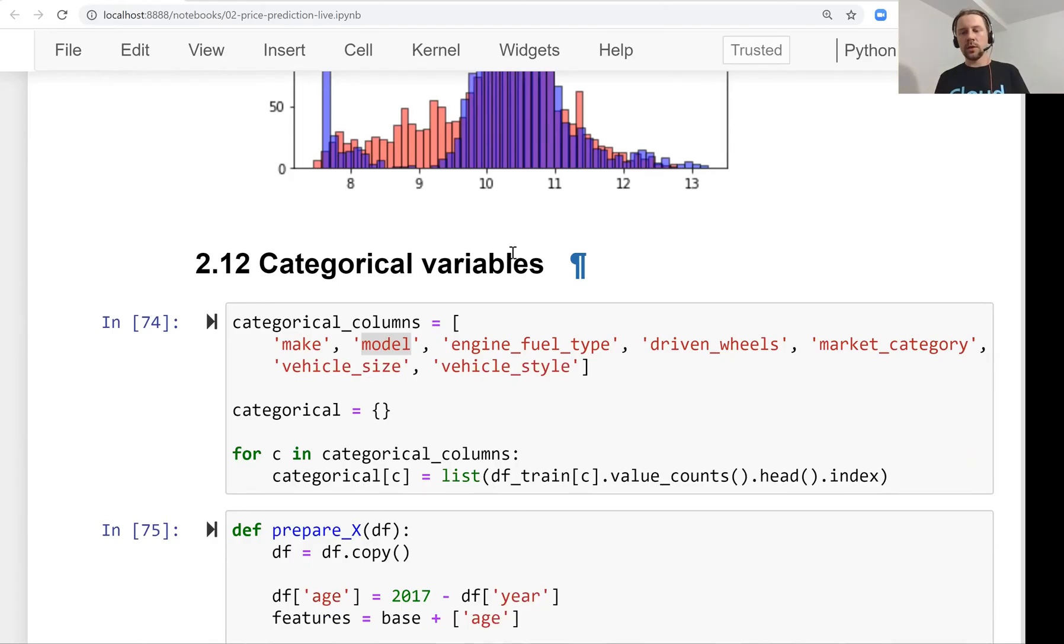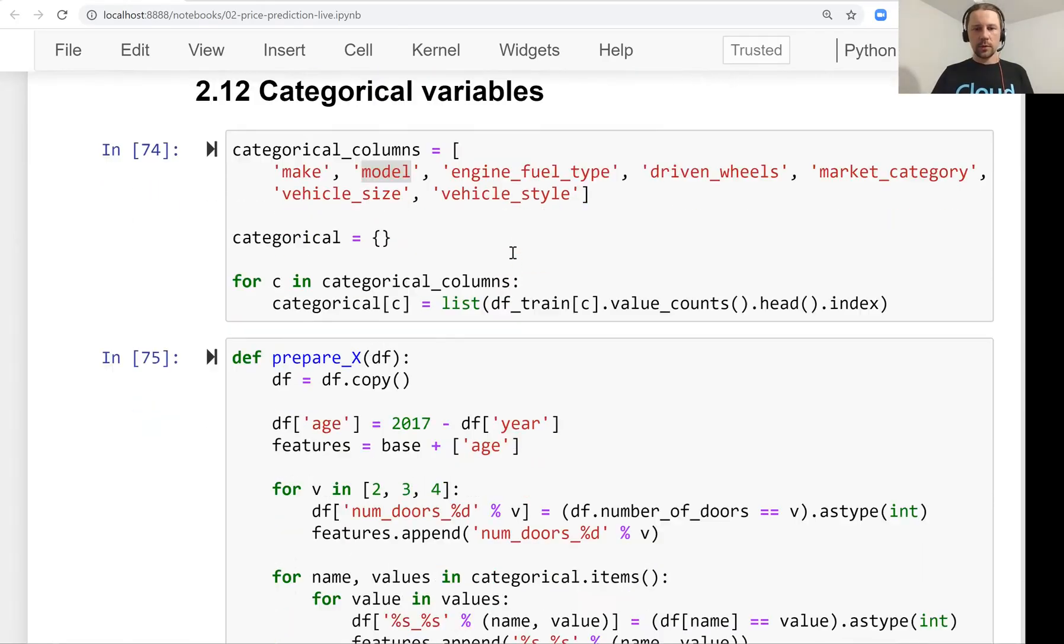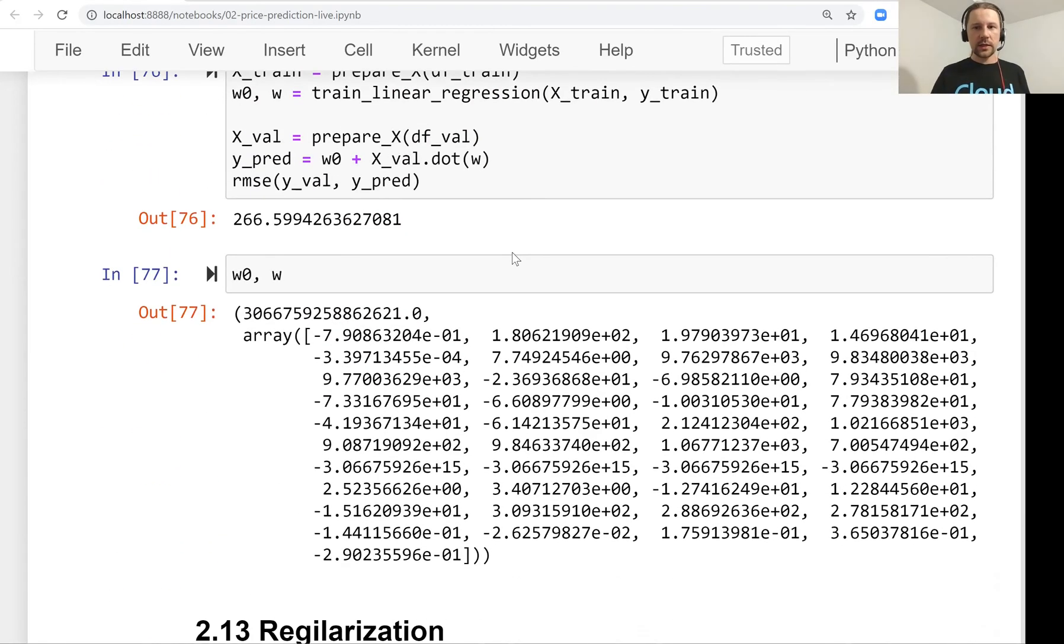Then we looked at how to integrate categorical variables. Here we represented each categorical variable with a bunch of binary columns, binary features. Actually, this way of encoding categorical variables is called one-hot encoding, and we will talk about that in more details in the next session when we talk about classification.